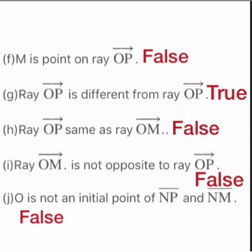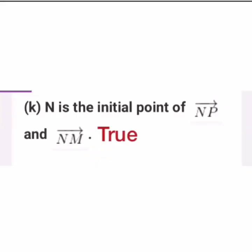Statement 10: O is not an initial point of ray OP — FALSE, because O is the initial point of ray OP. Statement 11: N is the initial point of ray NP and ray NM — TRUE. N is the starting point of both ray NP and ray NM.